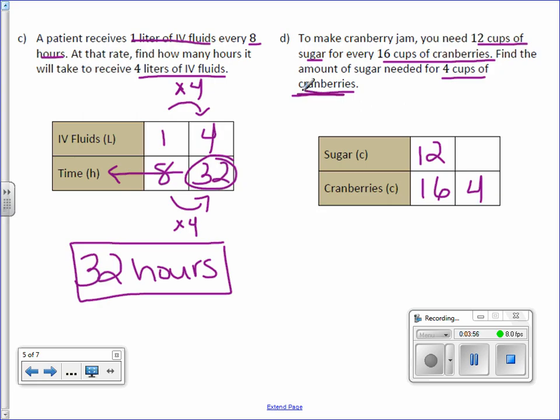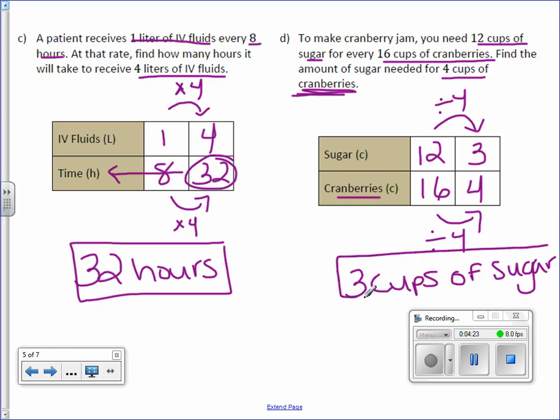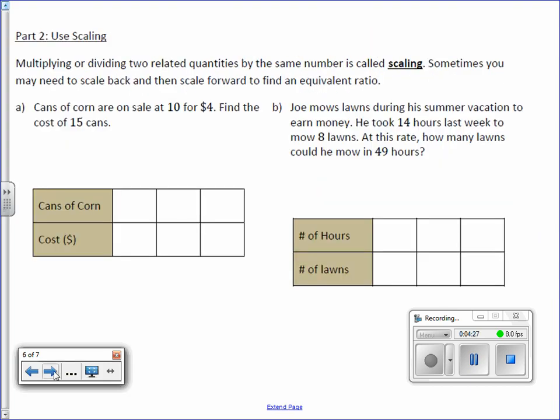And look at the labels. That will tell you which row to put the numbers in. How do we get from 16 to 4? We divide by 4. Do the same above. 12 divided by 4 is 3. So how many cups of sugar? 3 cups of sugar.